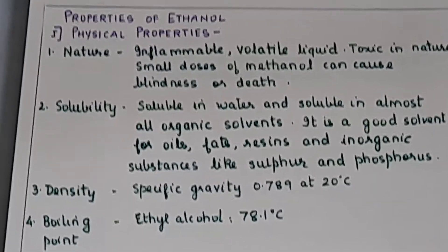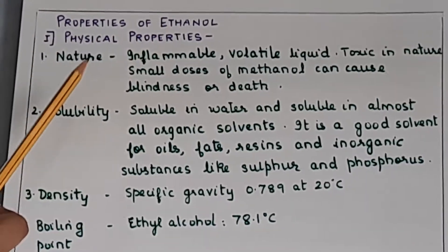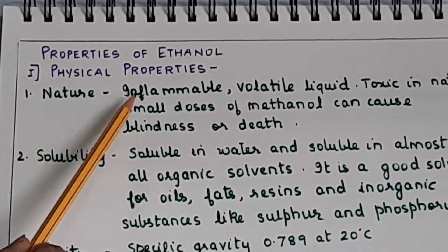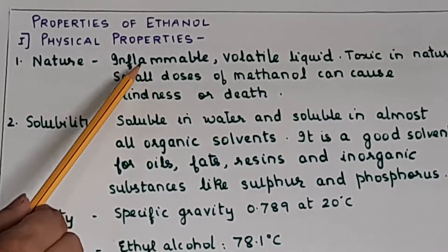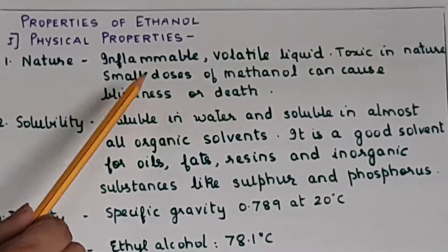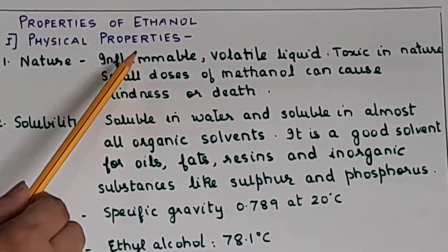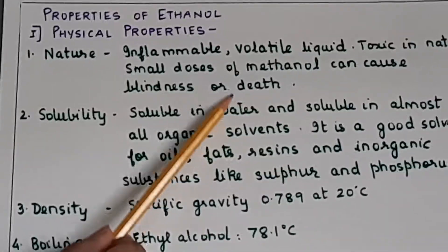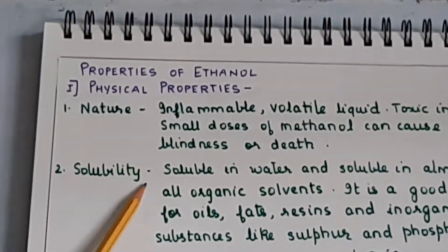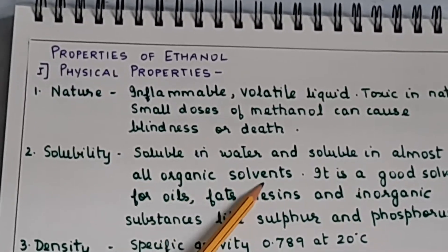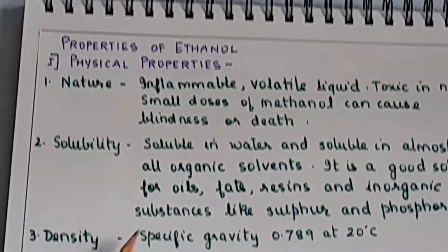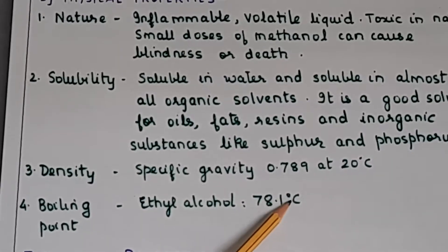Coming to the properties of alcohol, specifically ethanol. Physical properties are mentioned in the syllabus only for ethanol and carboxylic acid. Nature: it is highly inflammable — it will catch fire readily, so handle with care in the laboratory. It is a volatile liquid, toxic in nature, and small doses of methanol can cause blindness or death. Solubility: it is miscible in water and all organic solvents, and is a good solvent for oils, fats, resins, and inorganic substances like sulfur and phosphorus. Density: 0.789 at 20°C; boiling point: 78.1°C.